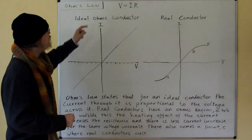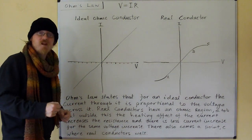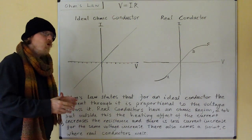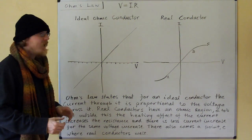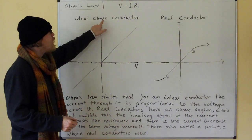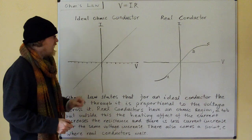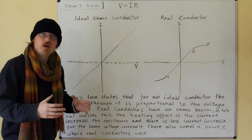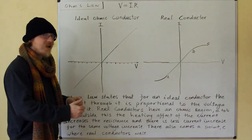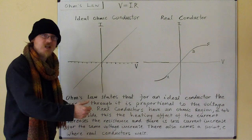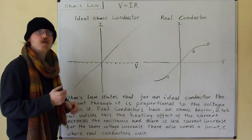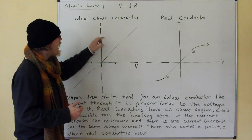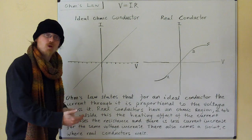Hi. Ohm's law: V equals IR. What Ohm's law is saying is that for an ideal ohmic conductor, as we increase the voltage across our conductor, we directly proportionally increase the current through it. We say that the voltage and the current are directly proportional.